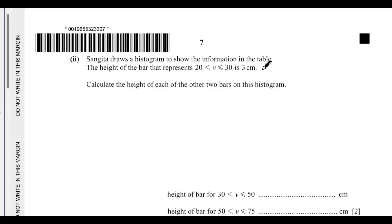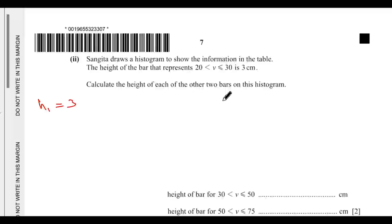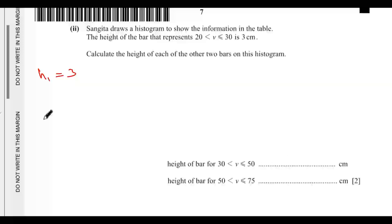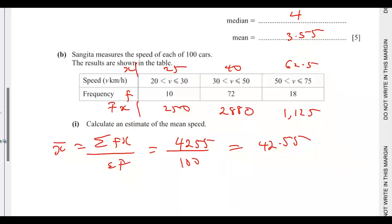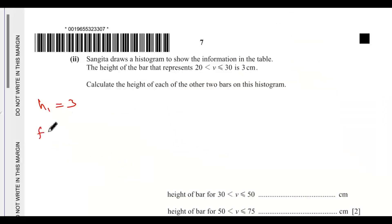Part c: Sangeeta draws a histogram using the table. The height of the bar representing 20 < v ≤ 30 is 3 cm — call that h1 = 3. We need to calculate the heights of the other two bars. For histograms, frequency density equals frequency divided by class width. For the first bar: frequency is 10, class width is 30 − 20 = 10.